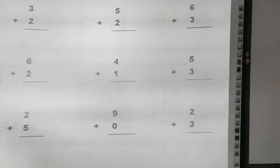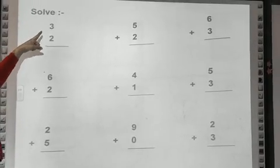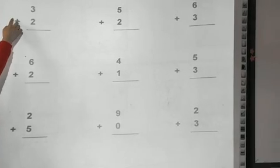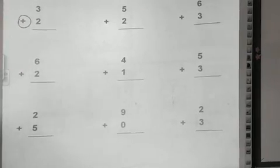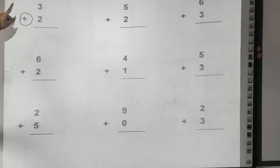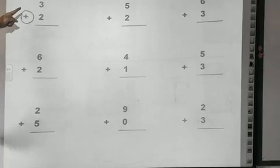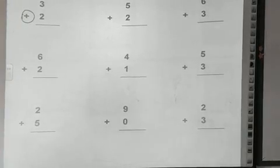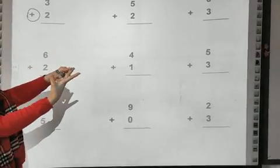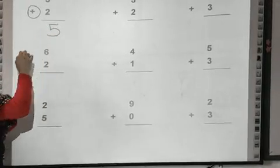Let's solve this question. Now here I have 3 plus 2. At first, make a circle around plus to make sure it's a plus. Now I ask myself: where is the greatest number — 3 or 2? Three. So I will put 3 in my mind and 2 on my finger. After 3: four, five. So I will write 5 here.